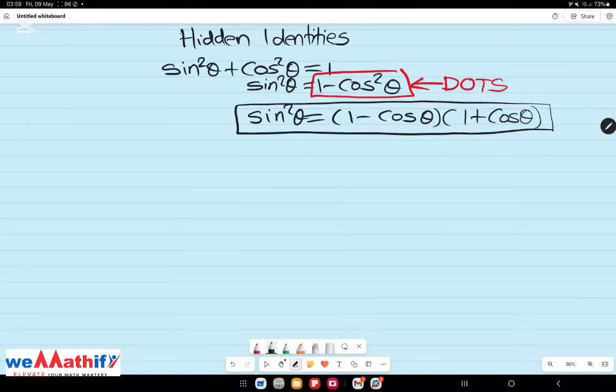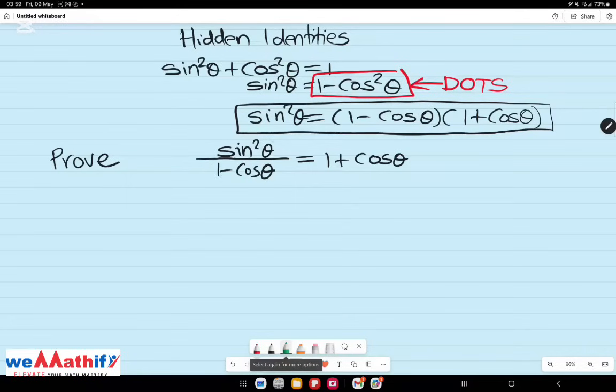It can come in handy in an exam situation. Take, for instance, this example. Let's suppose we wanted to prove that sine squared theta divided by 1 minus cos theta equals to 1 plus cos theta. It's pretty obvious at this point that sine squared theta is the easiest place for us to make a change.